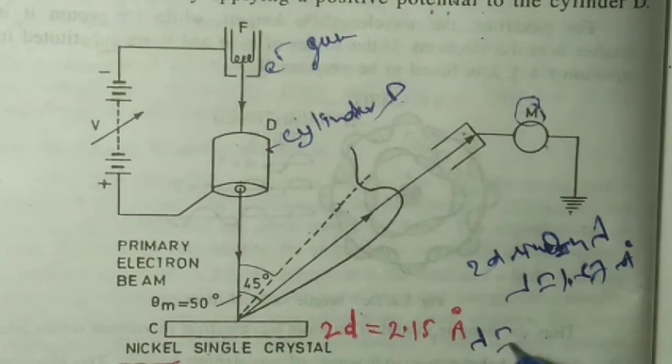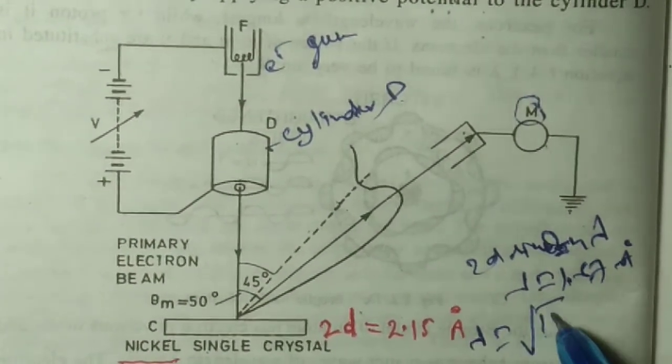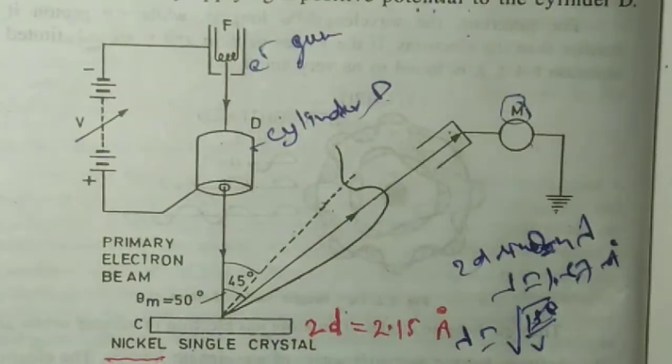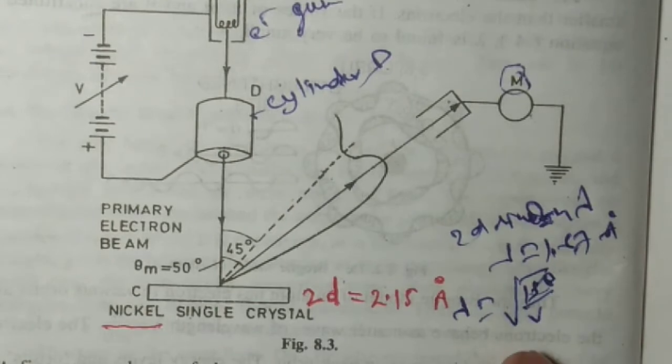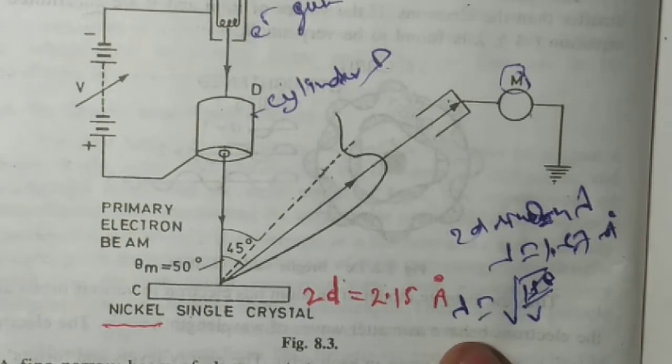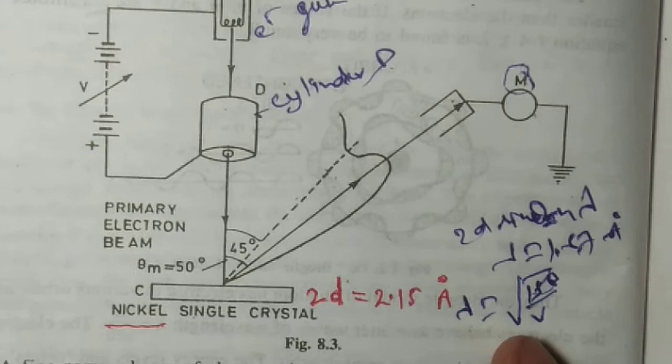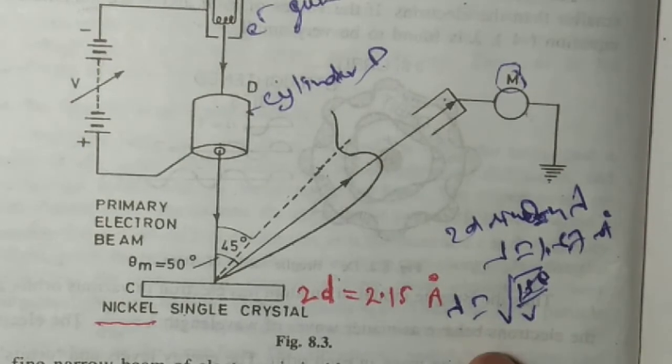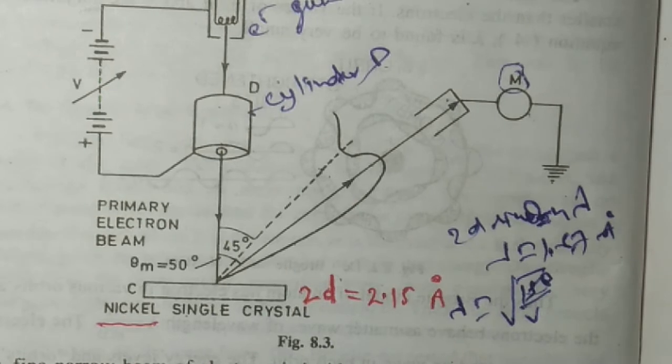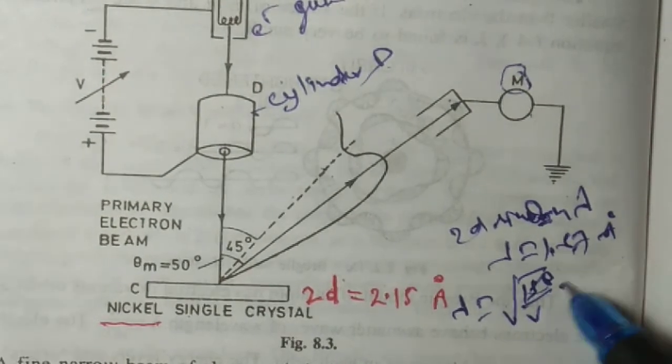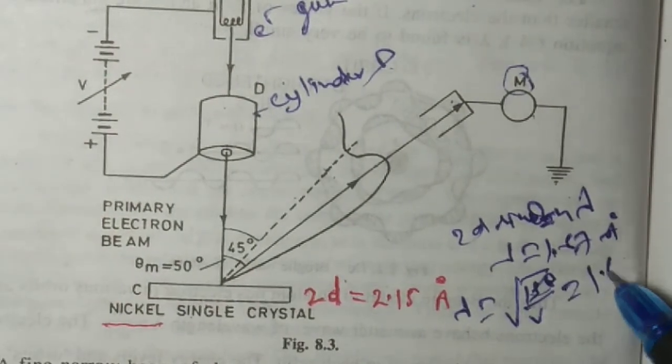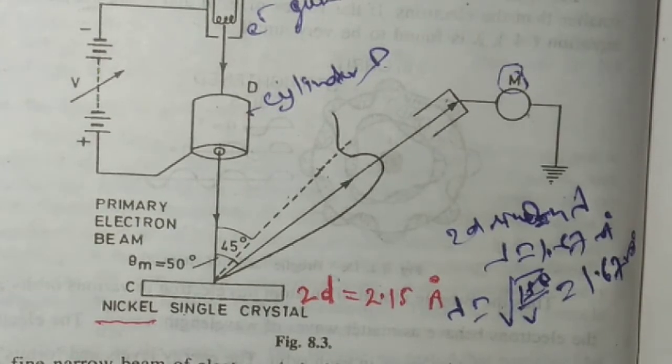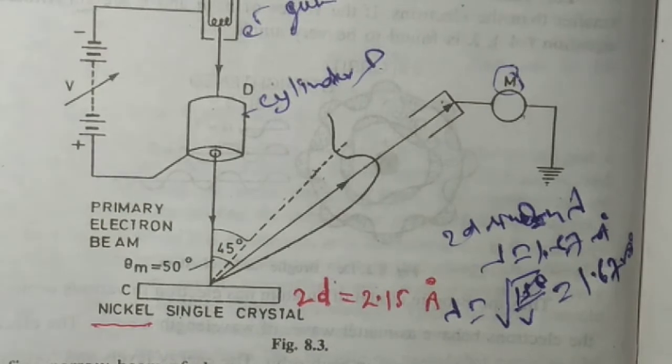If we find this lambda using the de Broglie equation for electrons - 12.3 over root V - this is the expression for wavelength for an electron having potential V. This also gives the value of lambda as 1.67 angstrom, which verifies the theoretical and experimental results.